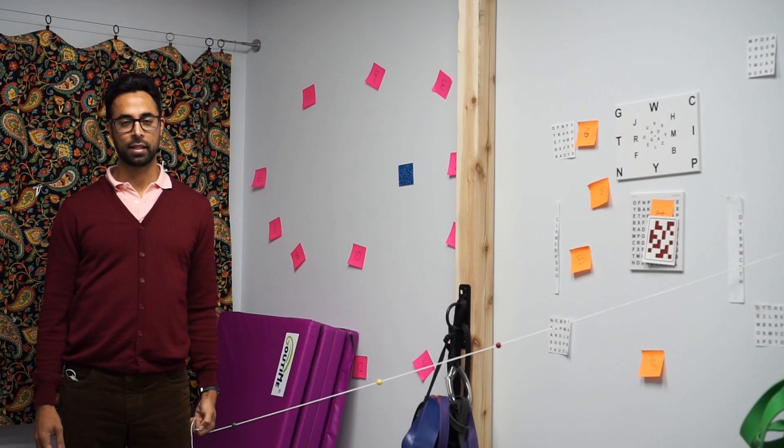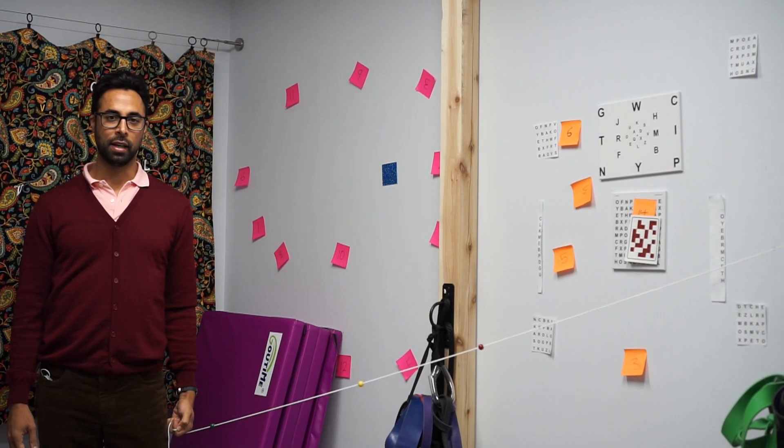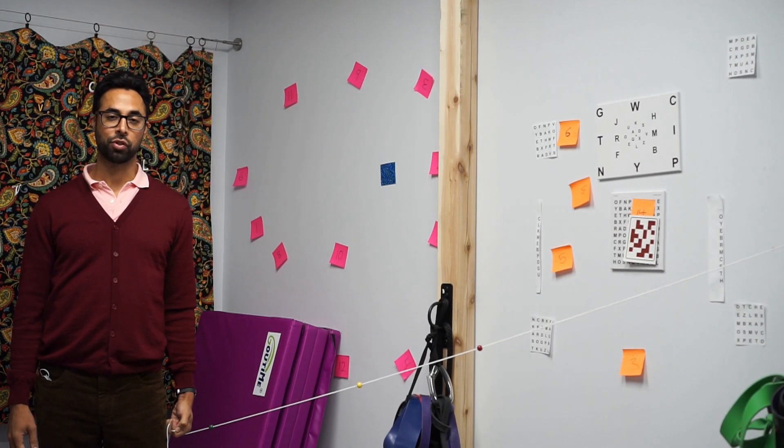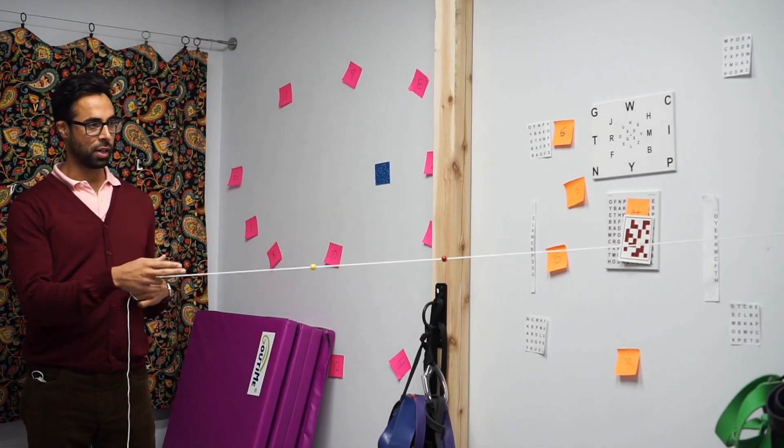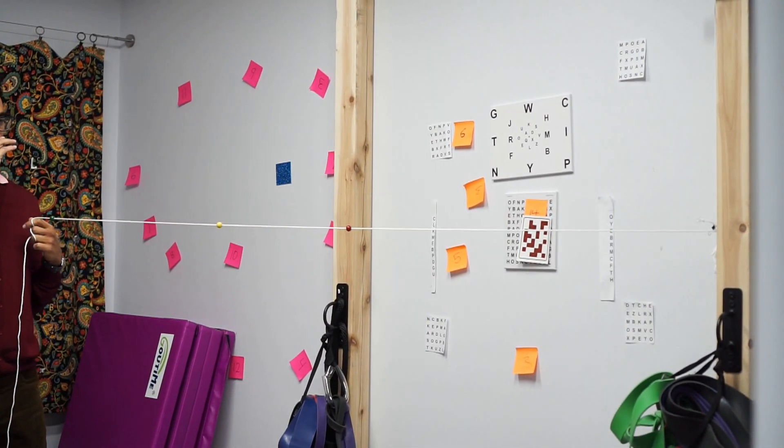Today I'm going to show you an exercise that some of our patients with vergence issues do, and it's called Brock String Jump Ductions. So you get a Brock String and you hook it up a little bit below the level of your nose.